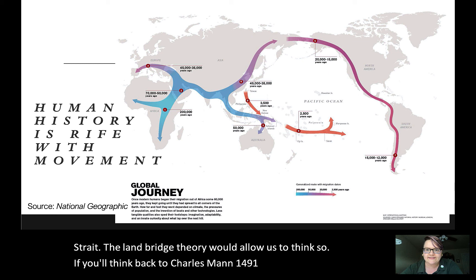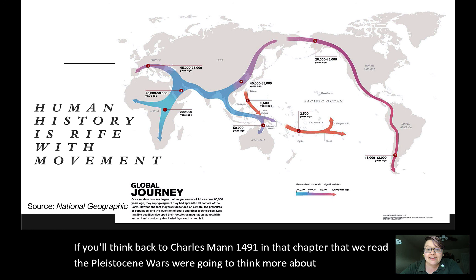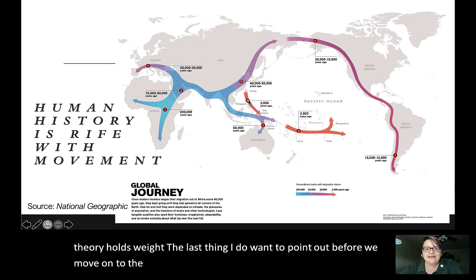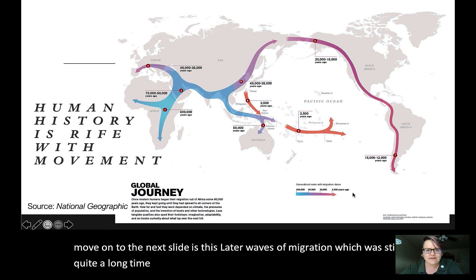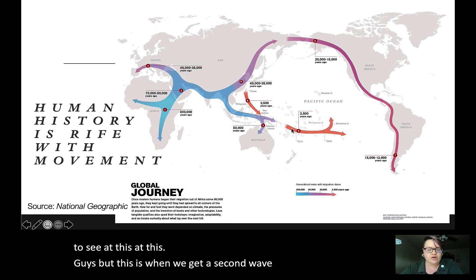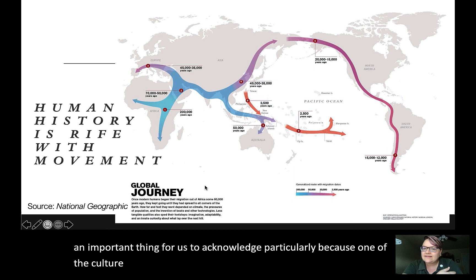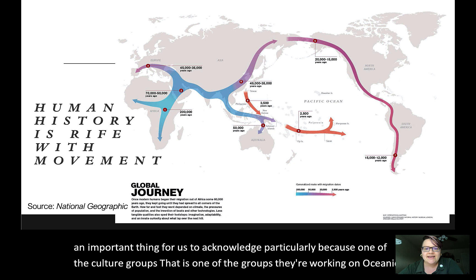Thinking back to Charles Mann's '1491' and the chapter 'Pleistocene Wars,' we'll consider more carefully how the scientific evidence stacks up and how we determine whether a theory holds weight. Before moving on, I want to point out this later wave of migration — around 2,500 years ago — which represents a second wave of oceanic migration. One of the culture groups we're working on is Oceania, and we notice a couple of waves: one of the oldest, around 50,000 years ago, brought peoples down across Southeast Asia to Australia and Tasmania.